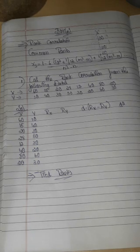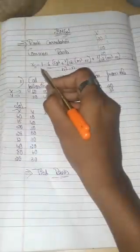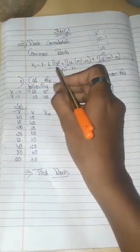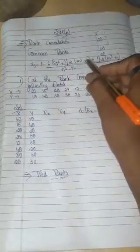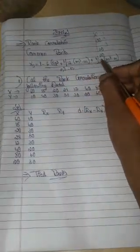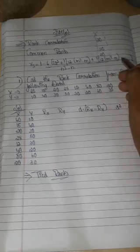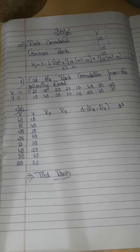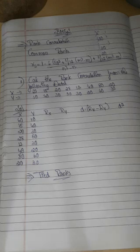So we have to use the common ranks formula: rs = 1 minus 6 into [σd² + (1/12)(m³ − m) + (1/12)(m³ − m)] divided by (n³ − n). This is the formula — the difference from the previous video is the addition of the correction factor terms.